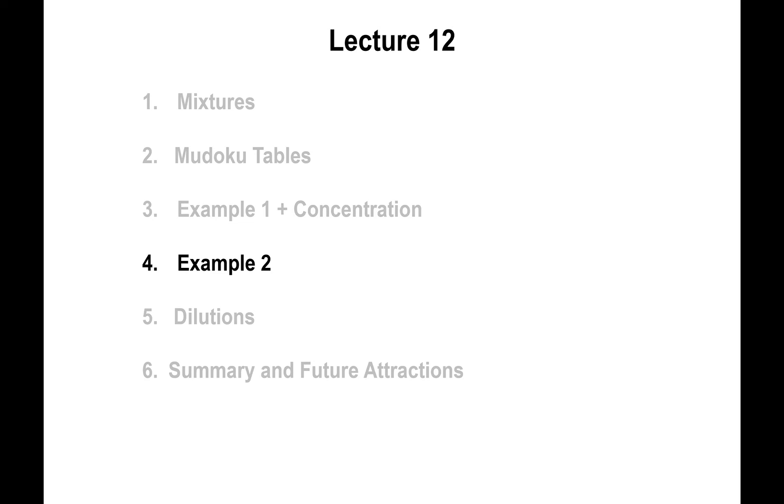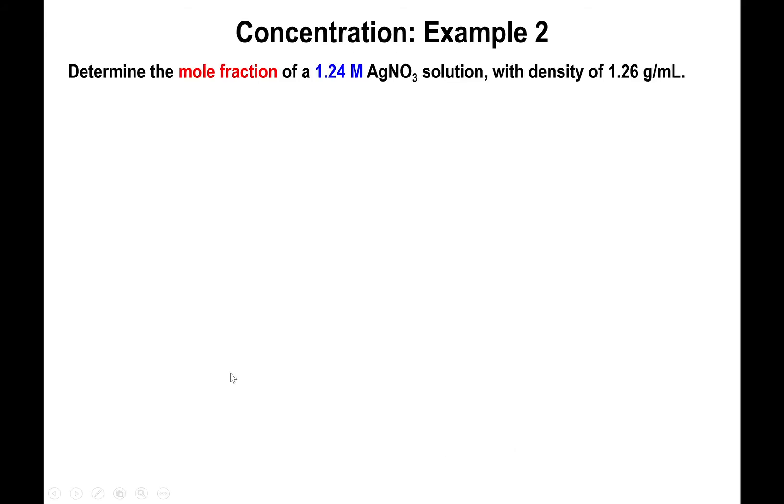Alright, let's go through a second example to show you the full extent of using Mudoku tables. In this example, I want to find the mole fraction of a solution based on the premise that the solution is 1.24 molar in concentration. We're also given the density of 1.26 grams per mL. So with this information, we're going to make the switch from molarity to mole fraction.